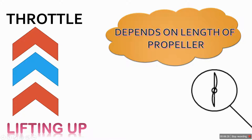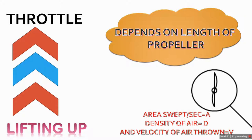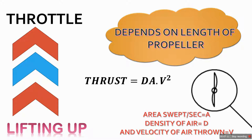Let us assume that this propeller sweeps an area A per second. That depends on the speed of rotation as well as the diameter of the propeller, so we can determine what area it covers per second. Defining density of air as d and the velocity of air thrown downwards by the propeller as v, these all decide the thrust produced. Thrust is the product of density d, area covered per second A, and velocity squared v².